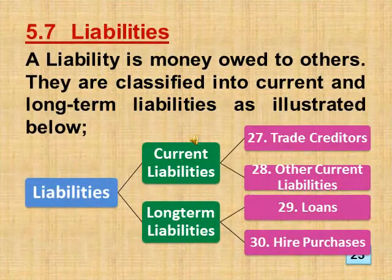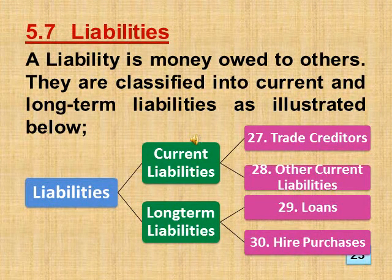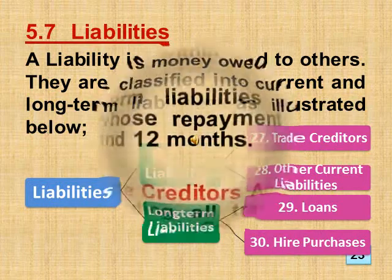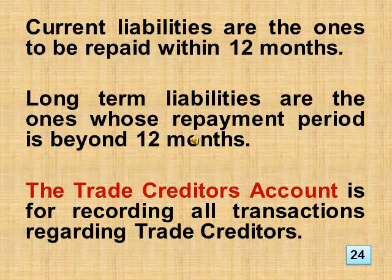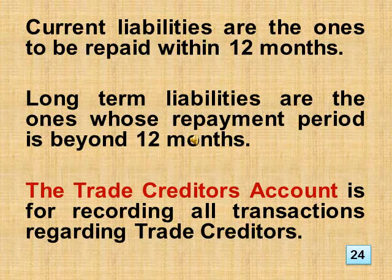Section 5.7 Liabilities. A liability is money owed to others. They are classified into current and long-term liabilities, as illustrated below. Current liabilities are the ones to be repaid within 12 months. Long-term liabilities are the ones whose repayment period is beyond 12 months. The trade creditors account is for recording all transactions regarding trade creditors.